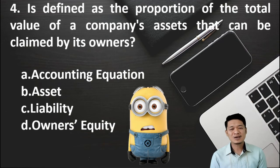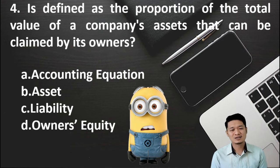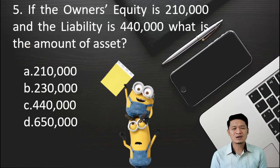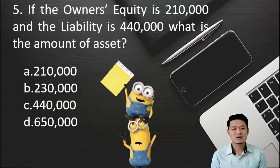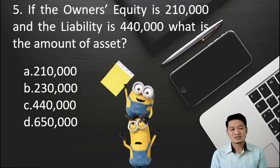For number 4: Is defined as the proportion of the total value of a company's assets that can be claimed by its owners. Is it letter A, accounting equation? Letter B, asset? Letter C, liability? Or letter D, owner's equity? For number 5: If the owner's equity is P210,000 and the liability is P440,000, what is the amount of asset? Is it letter A, P210,000? Letter B, P230,000? Letter C, P440,000? Or letter D, P650,000?